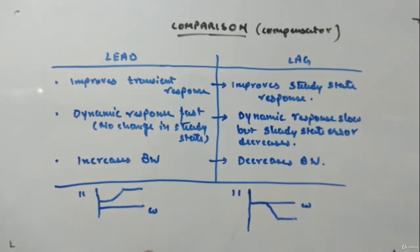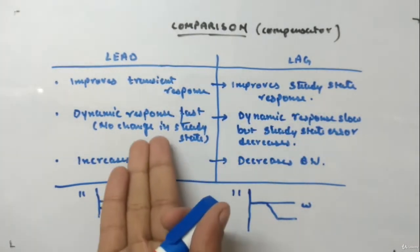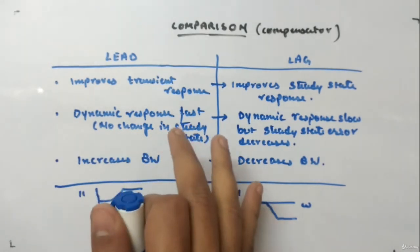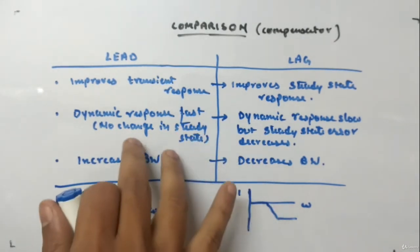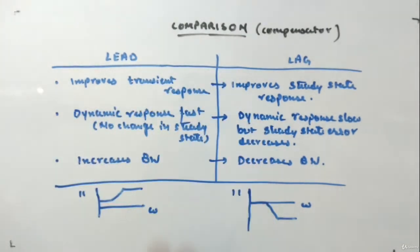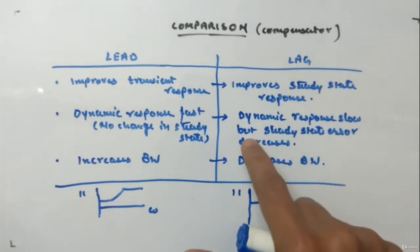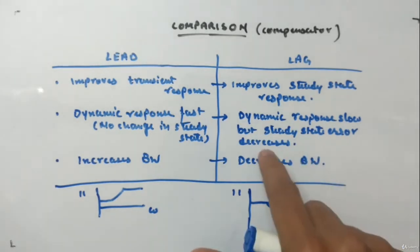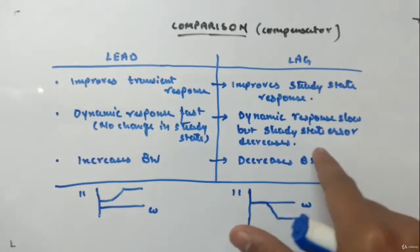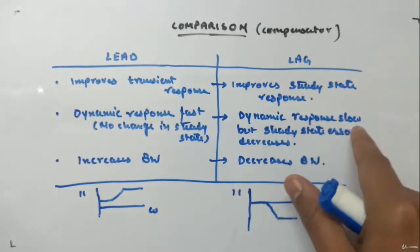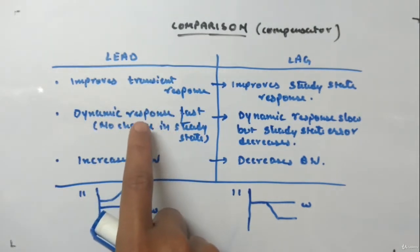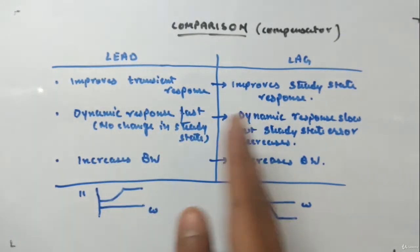The transient will reach steady state as fast as possible, whereas there will be no significant change in the steady state. The dynamic response will be way more faster. For lag compensator, the dynamic response will be slow but steady state error will decrease — it improves the steady state response by reducing the steady state error. For lead compensator, the steady state response will not change but the dynamic response will become faster. So it depends upon the condition what you want — you use compensators accordingly.